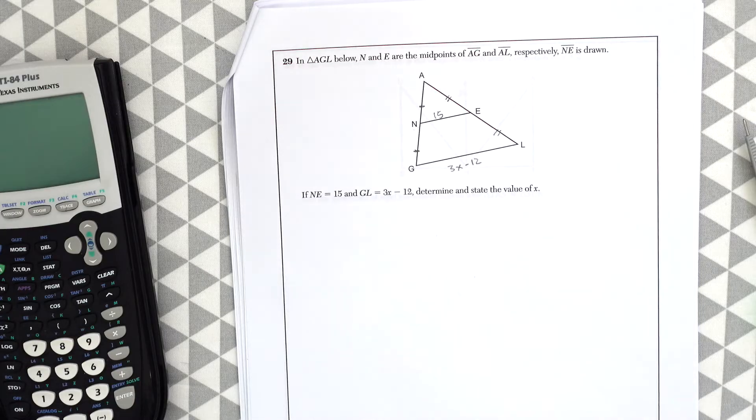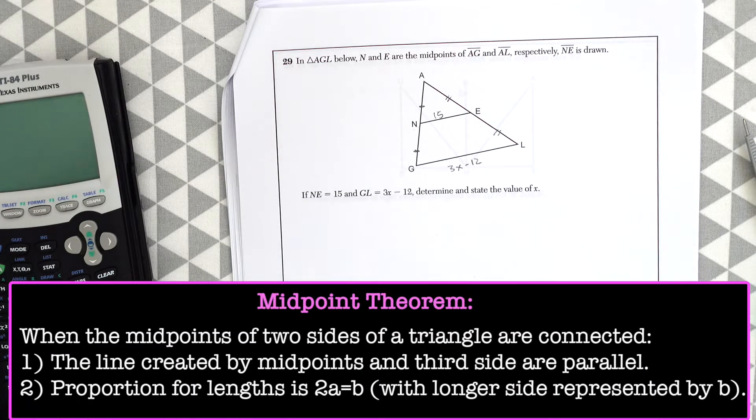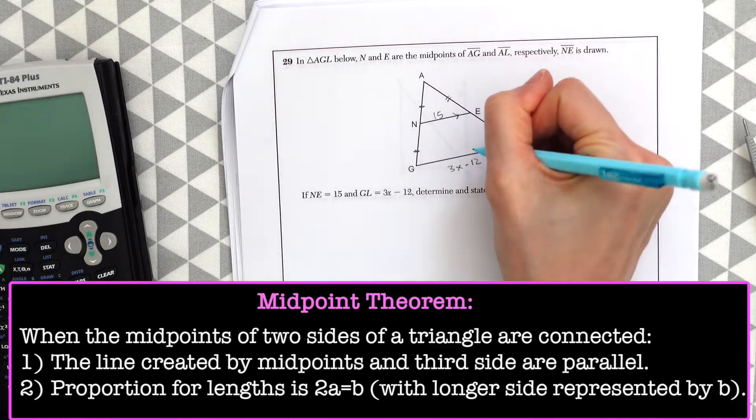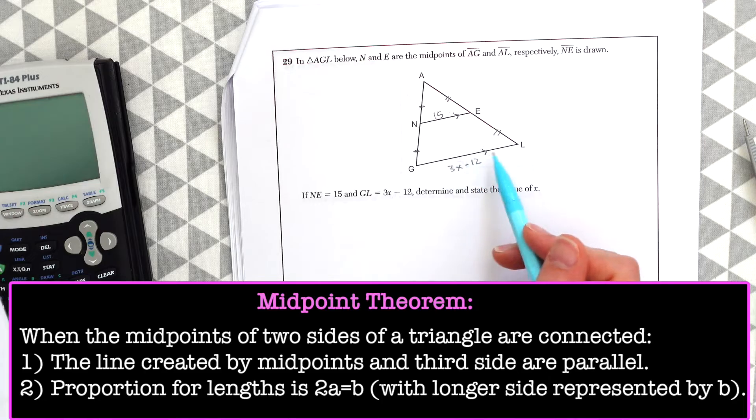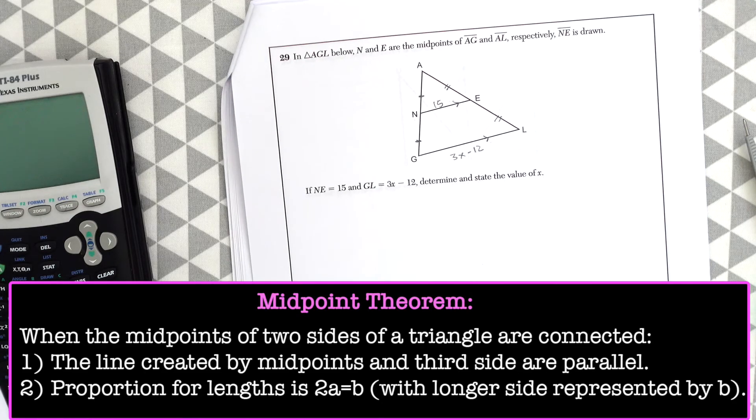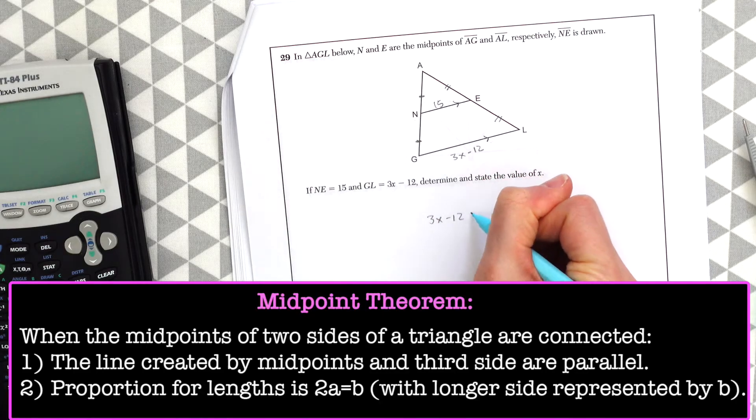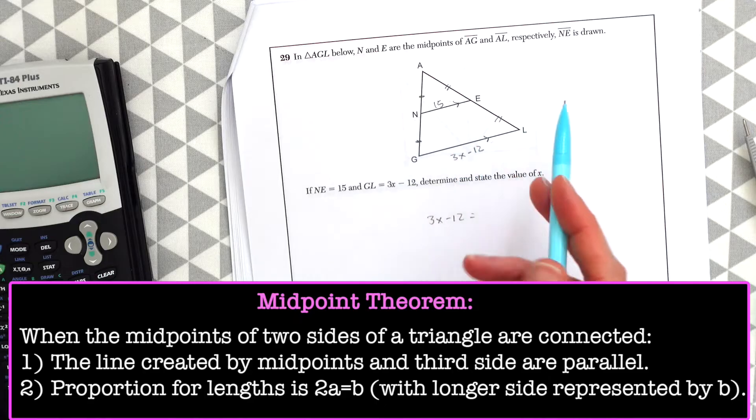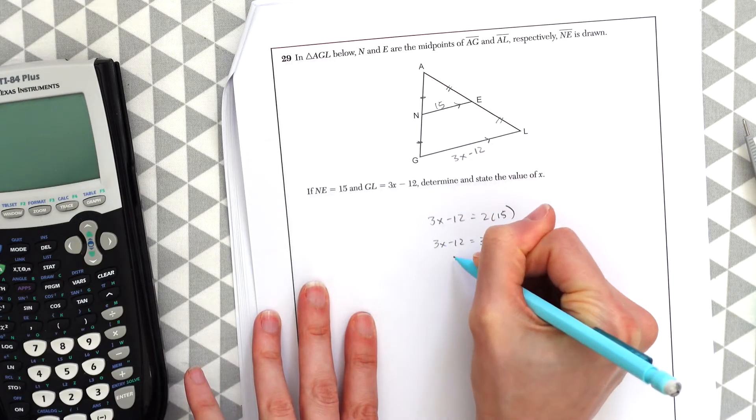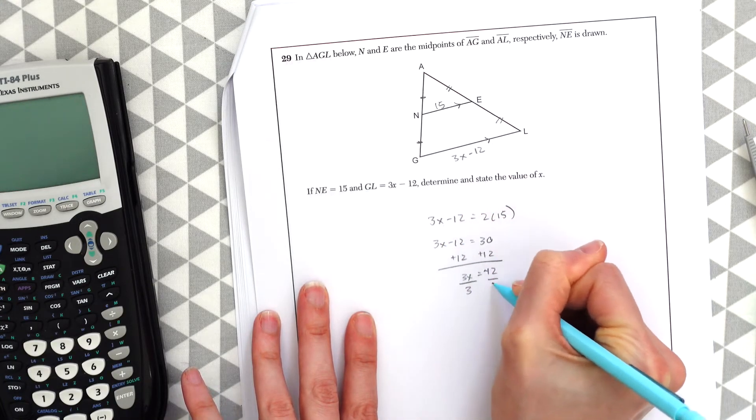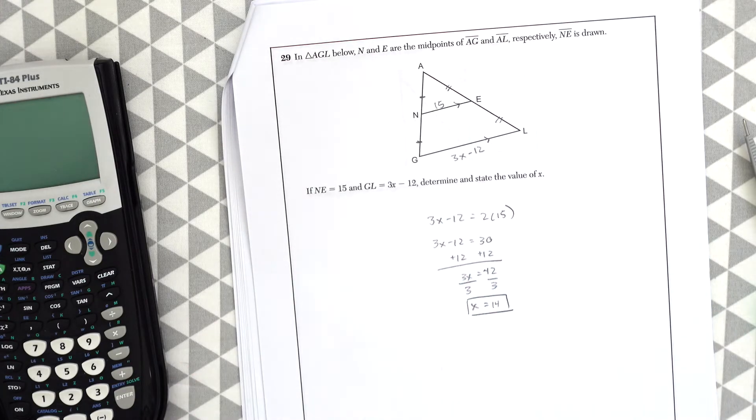So what we're going to be using here is something called the midpoint theorem. When midpoints of two sides of a triangle are connected, a couple of things happen. So first of all, the midpoint and base are parallel. This is parallel to this. And these line segments also have their length in a special proportion where the line formed by the midpoints is half the length of the parallel side. So basically this is going to be half of this. So knowing that, we can make a little algebraic equation. So we know that 3x minus 12 is going to be double whatever this is. So it's going to be 2 times 15. And then we could just use algebra to solve this. And we get x is equal to 14.